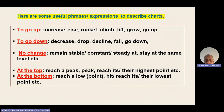Let's see some expressions and verbs you need for chart writing. For increasing or going up: increase, rise, rocket, climb, lift, grow, go up, surge, soar. For going down: decrease, drop, decline, fall, go down. If it's stable with no change: remain stable, constant, steady, stay the same, level off. If it reaches the top: reach the peak, reach the highest point.